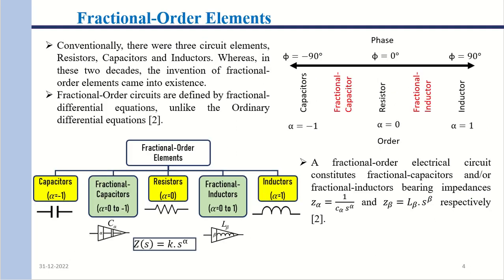Moving on to fractional order elements. Conventionally we had capacitors, resistors, and inductors. For a resistor the phase shift is 0°, for a capacitor it is −90°, and for an inductor it is +90°. But for a fractional capacitor the phase shift lies between 0° and −90°, while for a fractional inductor it lies between 0° and +90°.